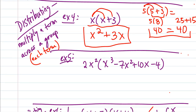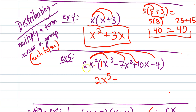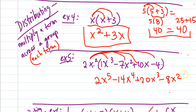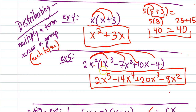Kick it up a notch. If I take 2x squared and distribute it across the group, it multiplies across each term — across all the adding and subtracting. So 2x squared times x to the third: 2 times 1 gives 2, and x squared times x to the third gives x to the fifth. Then minus 2 times 7 gives negative 14, x squared times x squared gives x to the fourth. 2 times 10 is 20, x squared times x gives x to the third. And 2 times negative 4 is negative 8, leaving just an x squared term. That one term multiplies across everything in the entire second group.